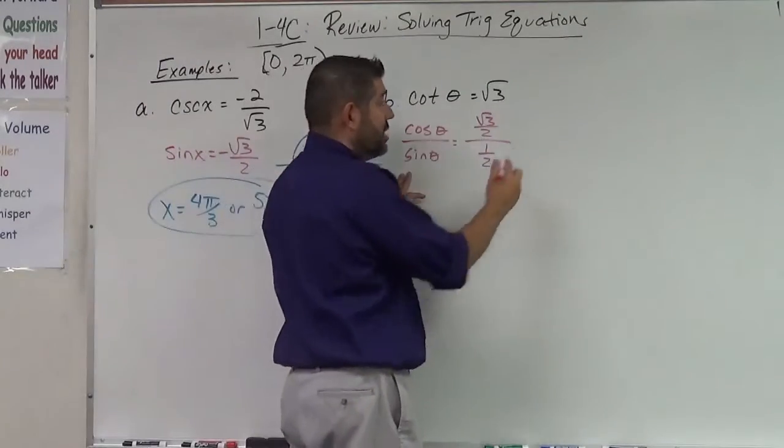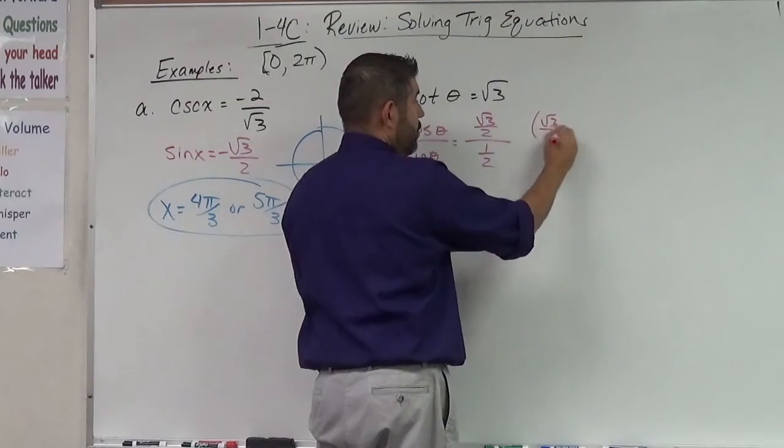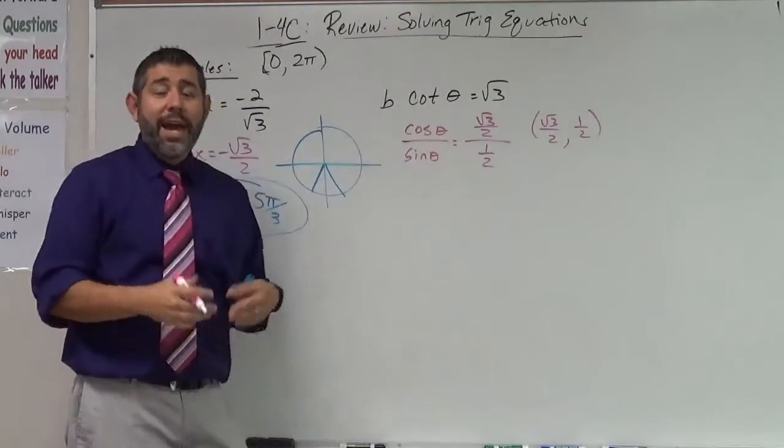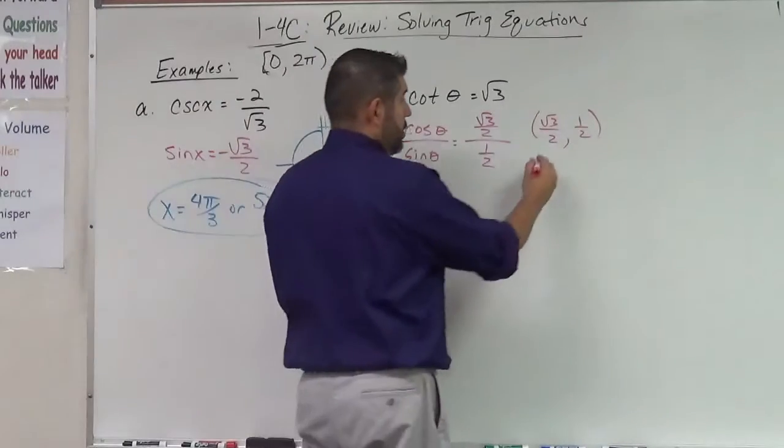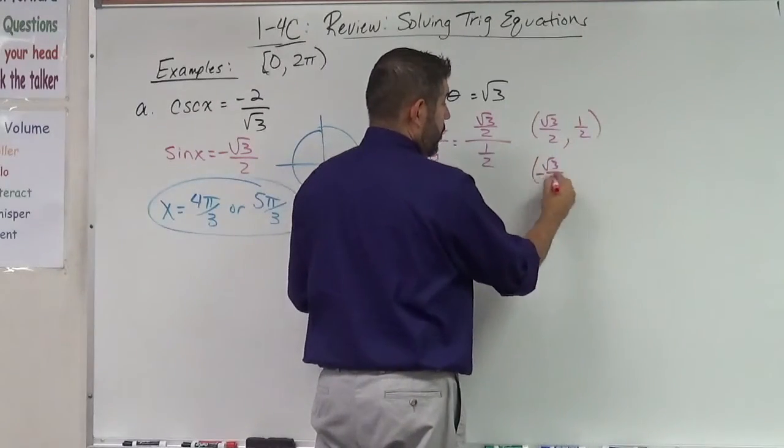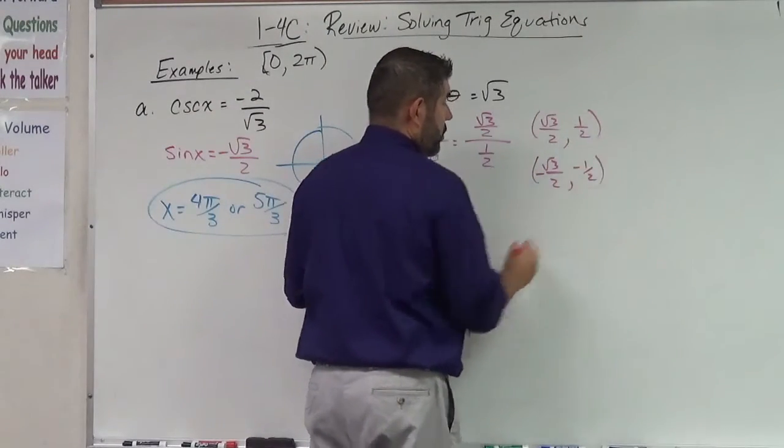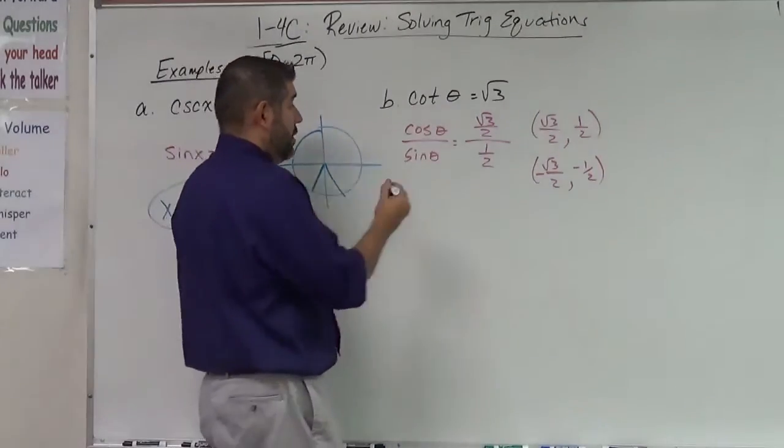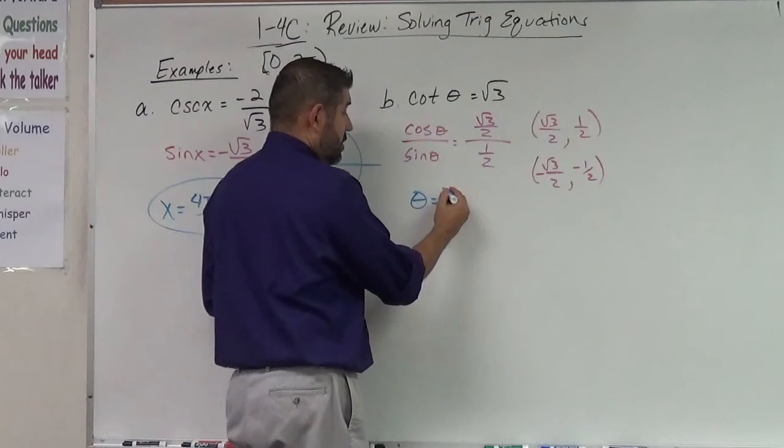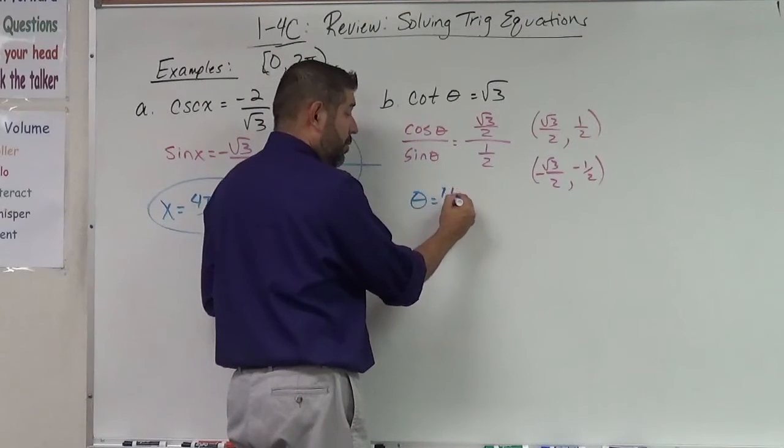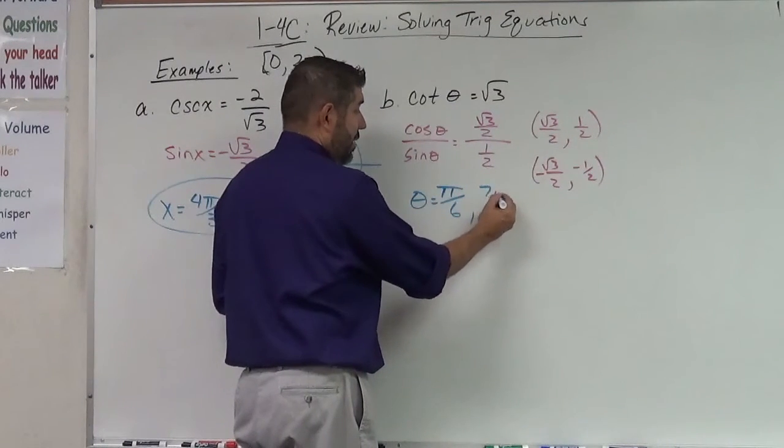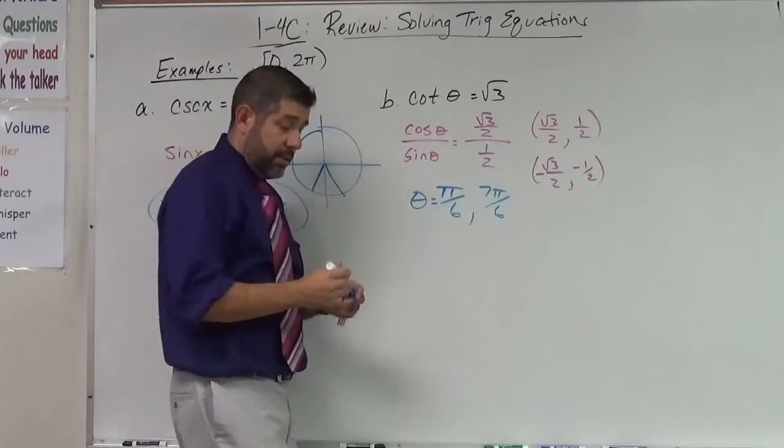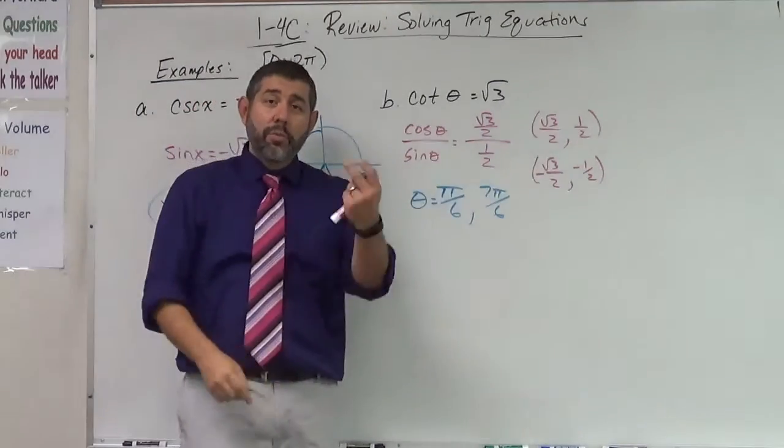Remember that the cosine is the x value, so we're looking for this point right here. We're looking for root three over two, one half, and they can also both be negative. So we're also looking for this point here on the unit circle. So where is that going to happen on the unit circle? That's going to happen at theta equals seven pi over six and seven pi over six. This one's going to give us the both negatives, this one's going to give us the both positives. Alright, I'll be back for two more examples.